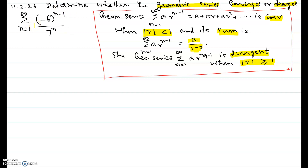We want to write sigma of negative 6 to the power n minus 1 over 7 to the n in the form of sigma a times r to the n minus 1 — that is, make it look like a geometric series in standard form.